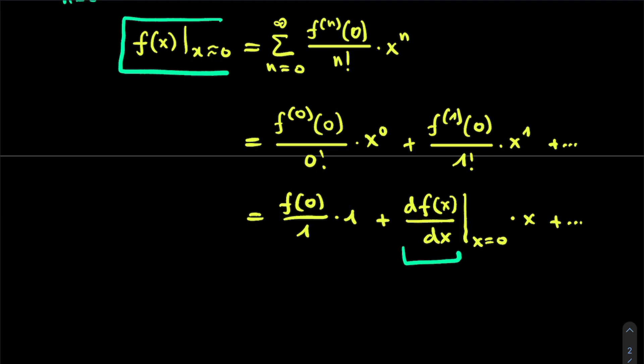And then for each term simply slap on this x to the power of n, and divide by n factorial, and you are completely done.